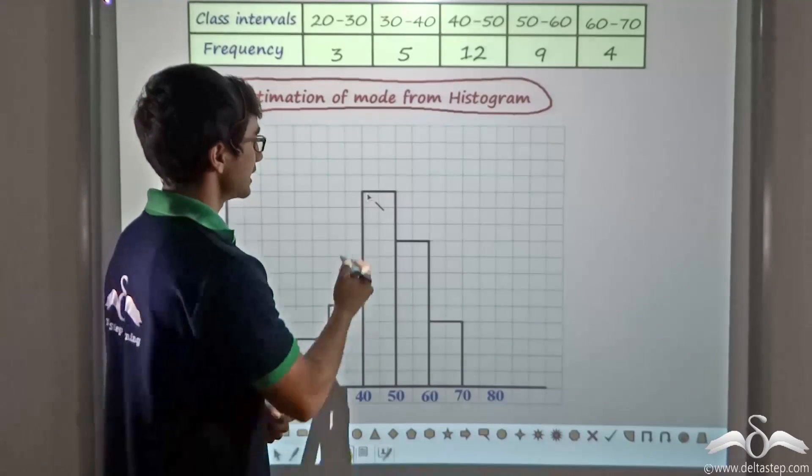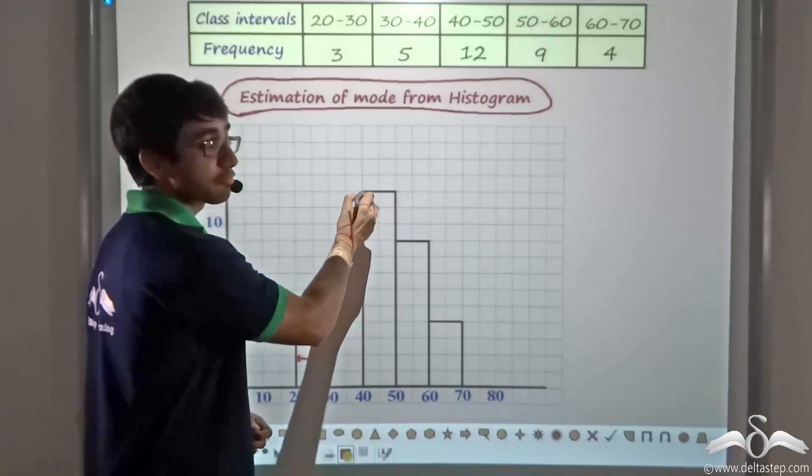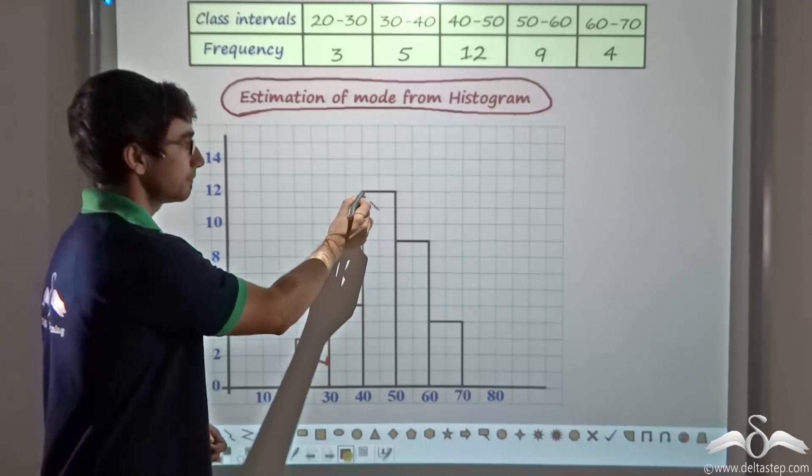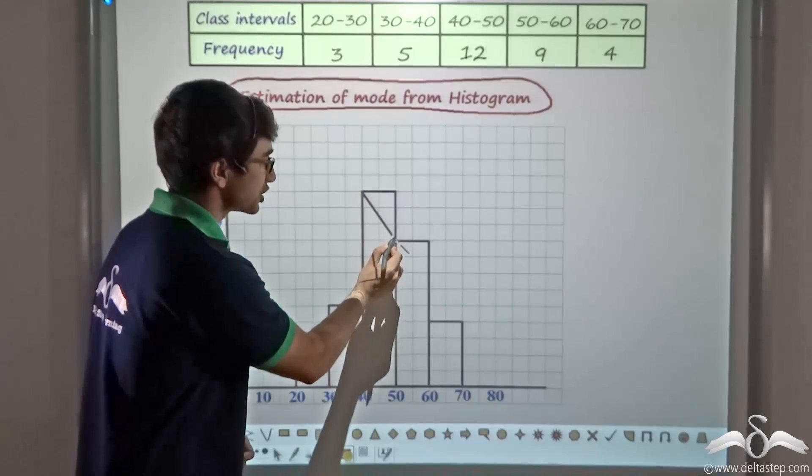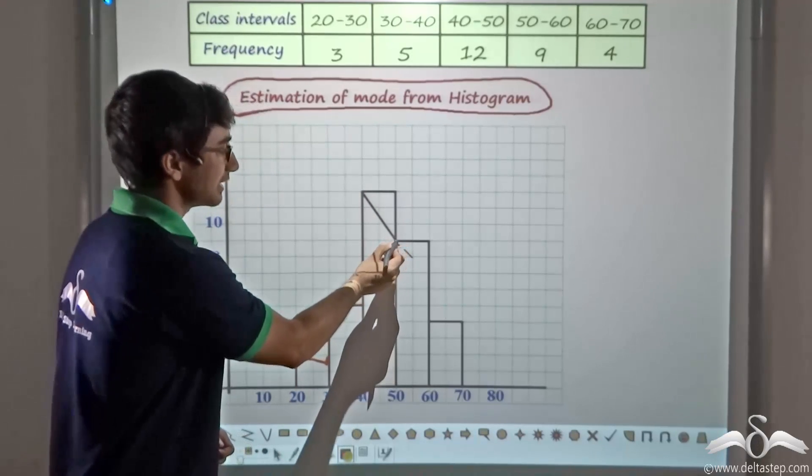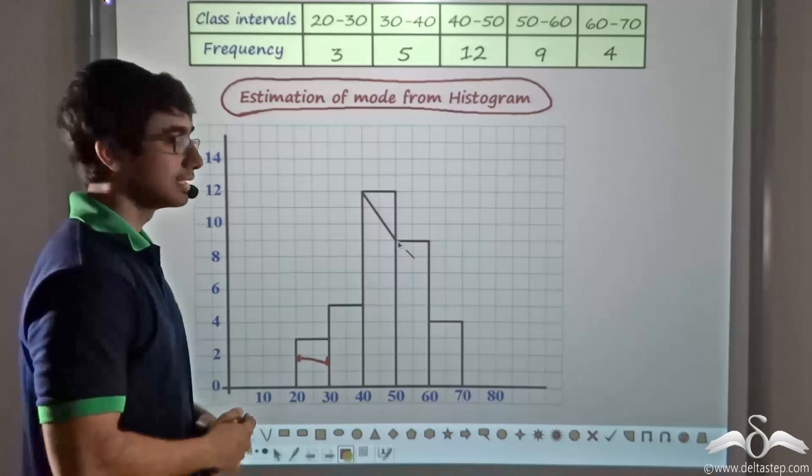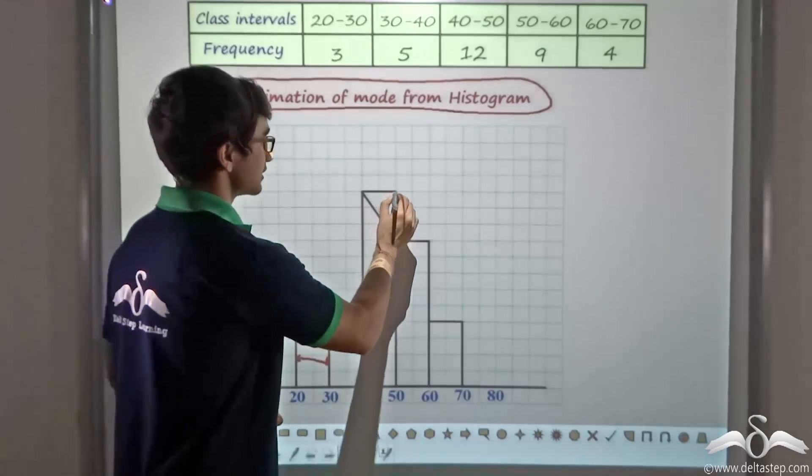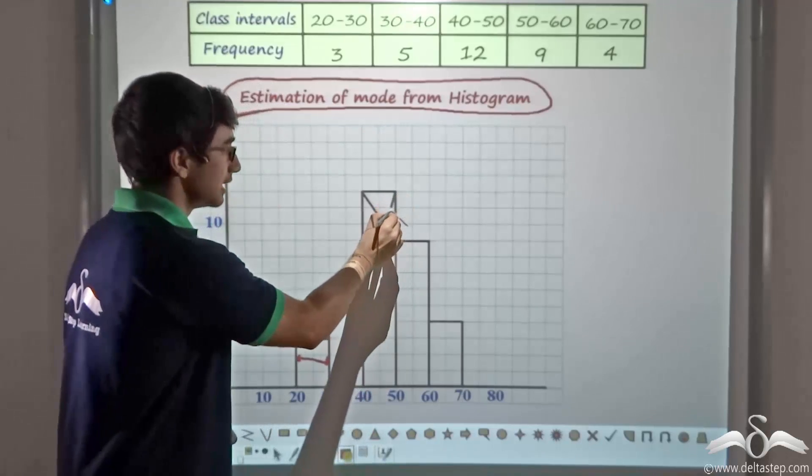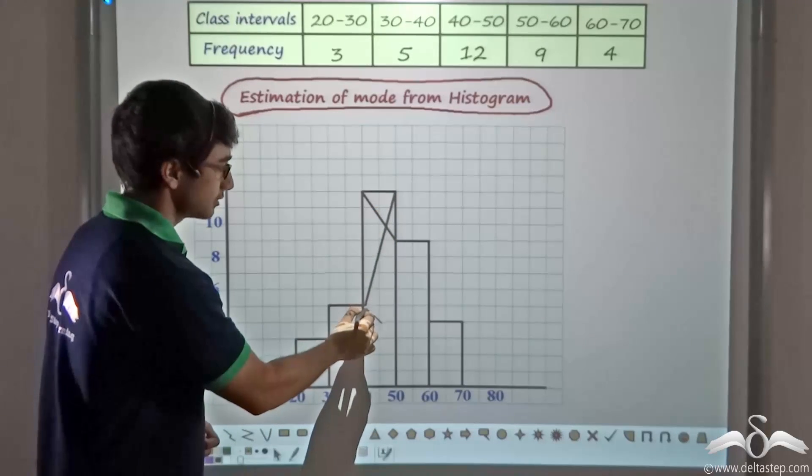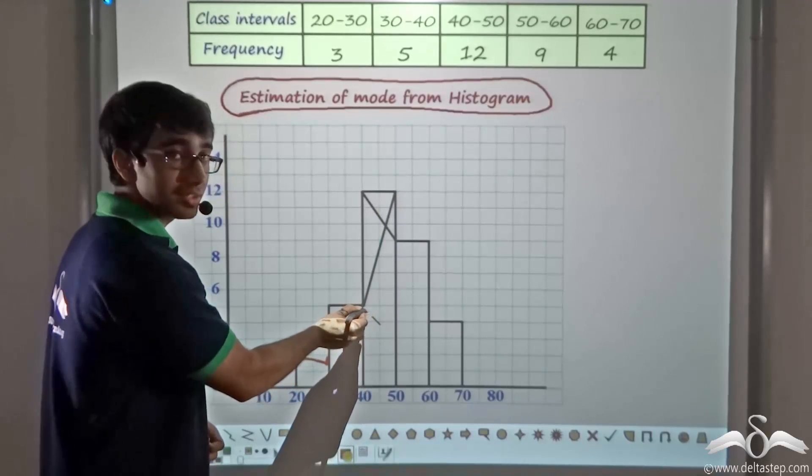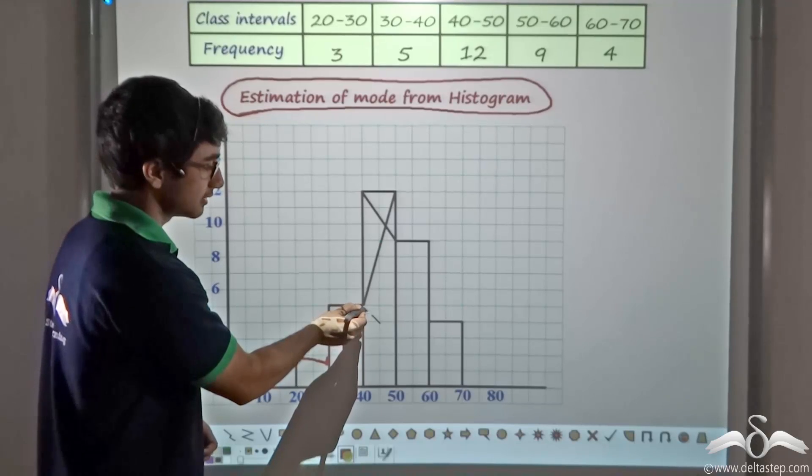What I do is, I consider the leftmost point of this bar and draw a straight line to meet the next bar where it starts. Similarly, I consider the rightmost point of this bar and draw a straight line to where the previous bar ends.